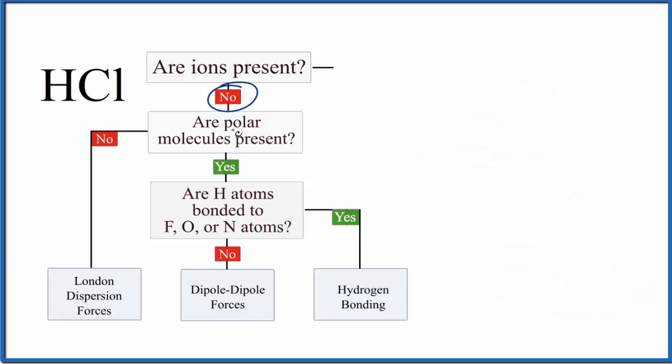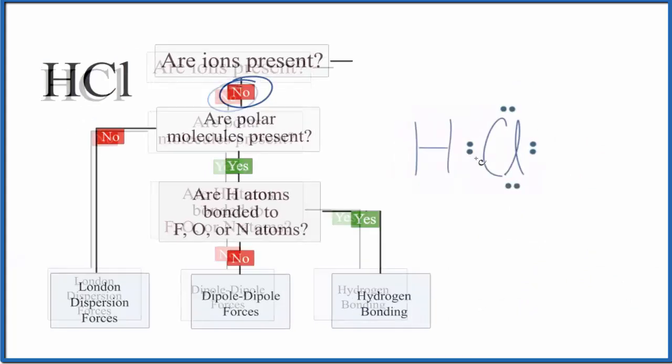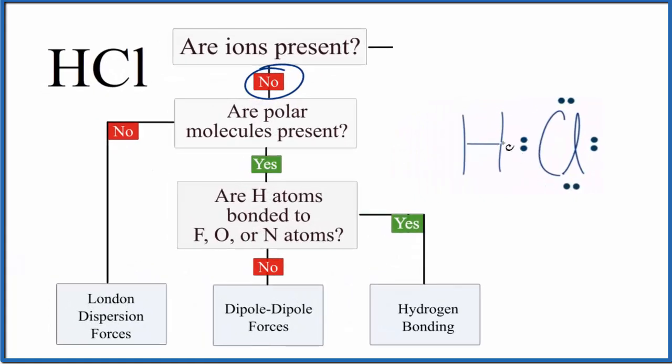Now we need to know whether HCl is a polar molecule, and it helps to look at the Lewis structure. There's a pretty big difference between hydrogen and chlorine in terms of electronegativity, so we would expect that this would be a polar molecule.